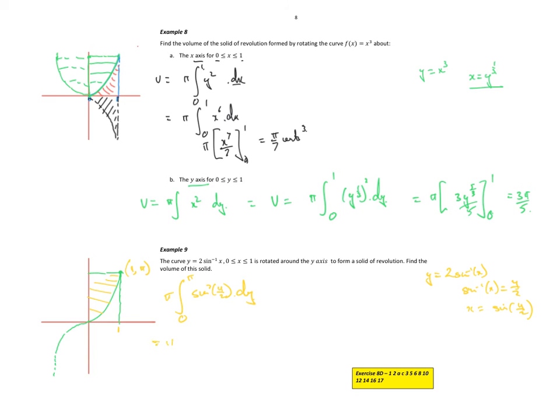From there, double angle formula. Sine squared x is a half, 1 minus cos 2x, so 2 times 1 on 2 is just y, dy.